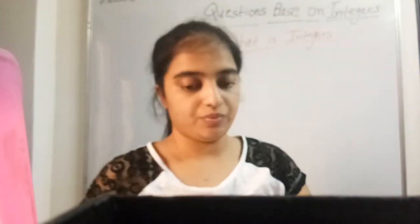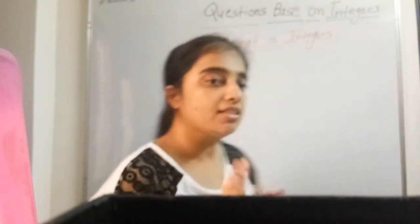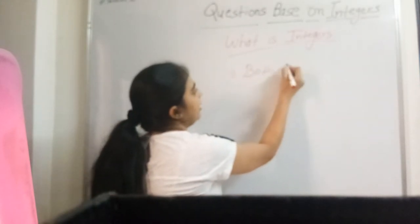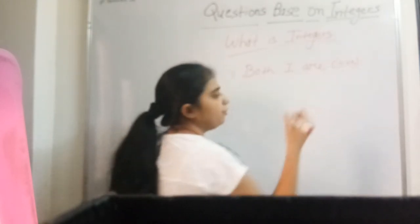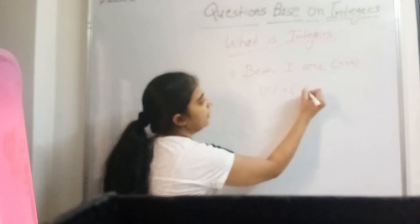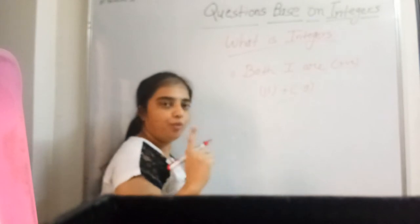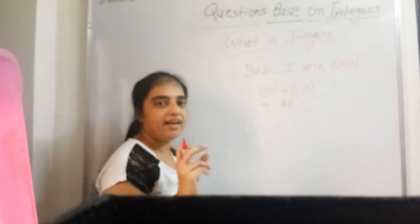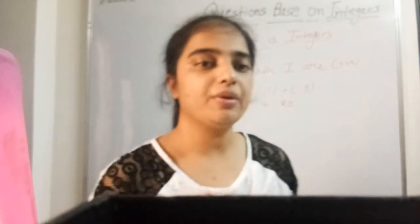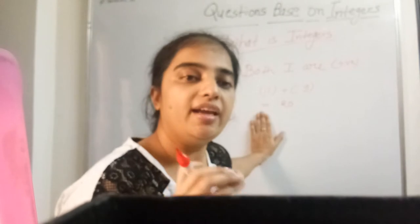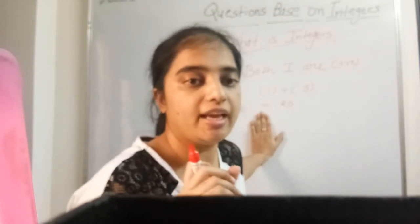Next is addition — addition kaise karte hain. Jab bhi aapko do integers given hon, woh integers — first condition: ya to dono integers positive hon. Both integers are positive. If I give you two numbers, their sum will also be a positive integer. That is the first condition in case of addition.